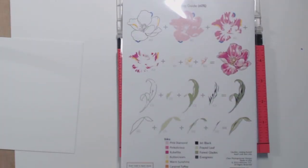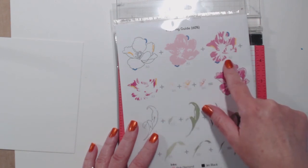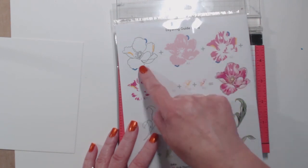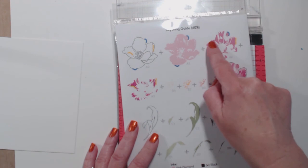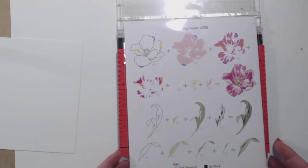To the third card. This time I'm going to be using the layering elements. As you can see here, I'm pointing out the little references they have on the reference sheet to show you how to align the stamps.